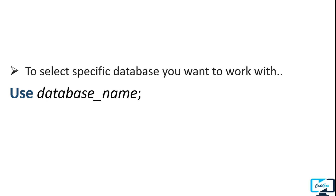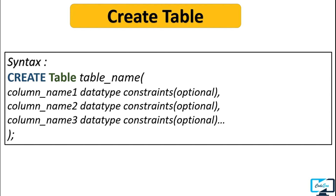Now let's create a table inside the database. The general syntax is: write the keyword CREATE TABLE, then the name of the table, and then define the structure of the table inside parentheses. Inside the parentheses, write the column name, its data type, and any optional constraints. We already discussed data types in the last video, and in the upcoming video we will discuss constraints in detail. You can define any number of columns according to your requirement.